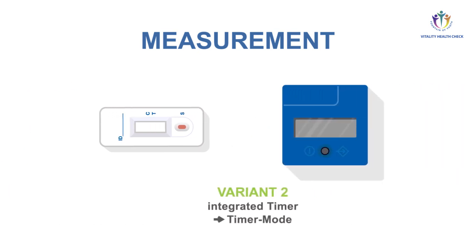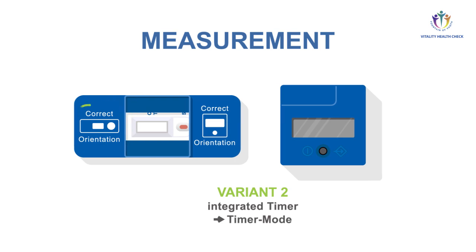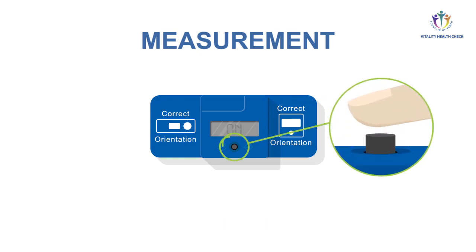For variant two, timer mode of the VHC reader, place the adapter over the test cassette. Control for correct alignment according to the pictograms. Place the VHC reader in the right direction on top of the adapter. Turn it on by pressing the button shortly. After a self-test, the VHC reader shows on.